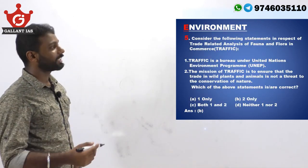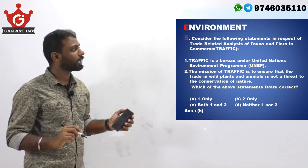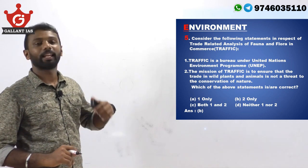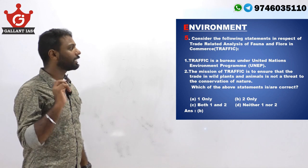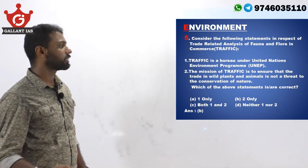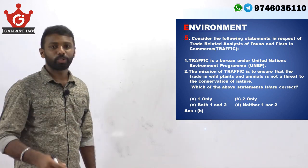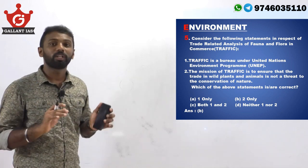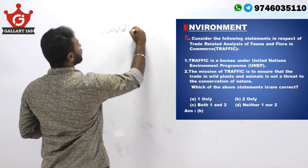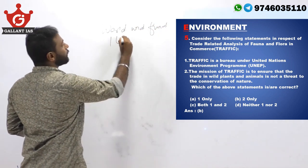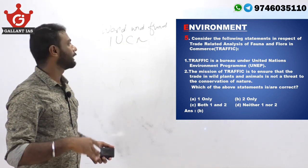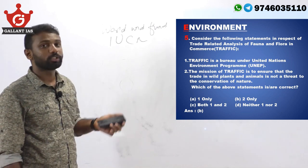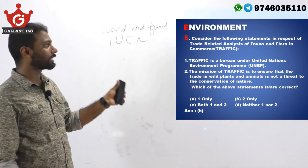Next question is on environment. Consider the following statements in respect of TRAFFIC — Trade Related Analysis of Flora and Fauna in Commerce. Statement 1: TRAFFIC is a bureau under the United Nations Environment Programme. Statement 2: the mission of TRAFFIC is to ensure that trade in wild plants and animals is not a threat to the conservation of nature. Actually, TRAFFIC is an NGO which monitors wildlife trade and is not under UNEP. It is a joint program of the Worldwide Fund for Nature and IUCN — the International Union for Conservation of Nature and Natural Resources. So statement 1 is wrong. Statement 2 is true because that is the clear objective of TRAFFIC.